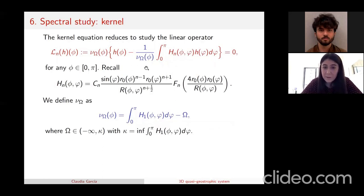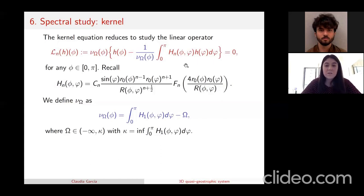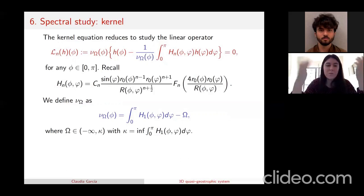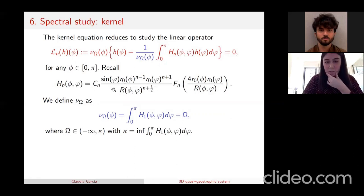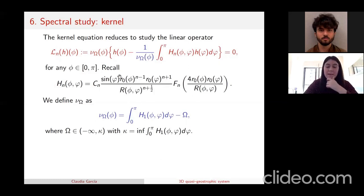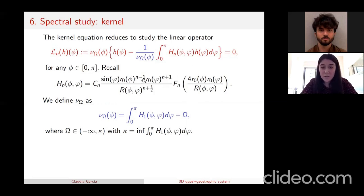To study this eigenvalue problem nicely, we first check that the operator is self-adjoint, which requires the kernel to be symmetric in phi and bar-phi. From the definition, the big R is symmetric; the hypergeometric function is also symmetric. However, in the numerator we have a factor of sine(bar-phi) but not sine(phi), and the exponents are not the same, so we pull out sine(bar-phi) and r₀(bar-phi) squared outside and incorporate them into a measure.